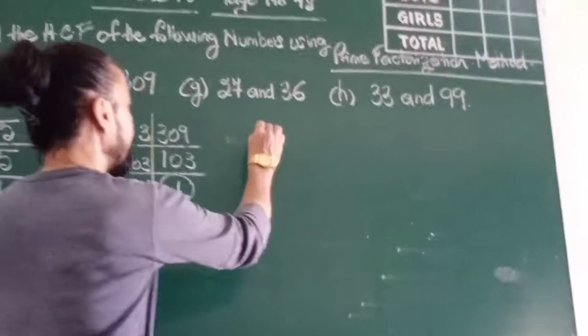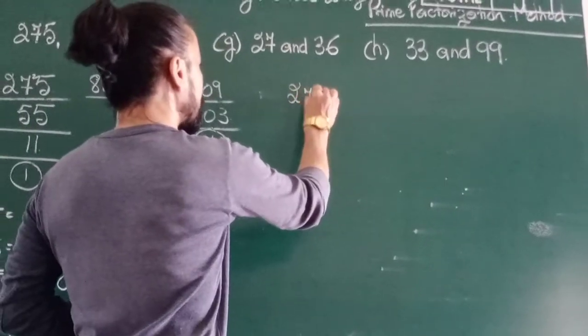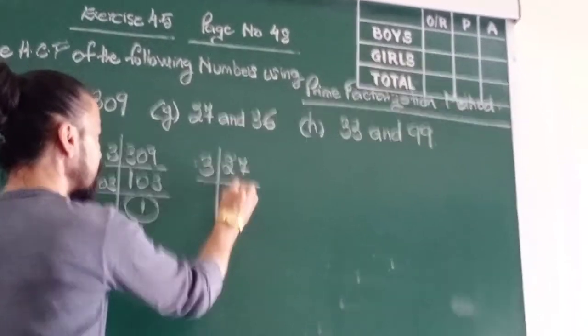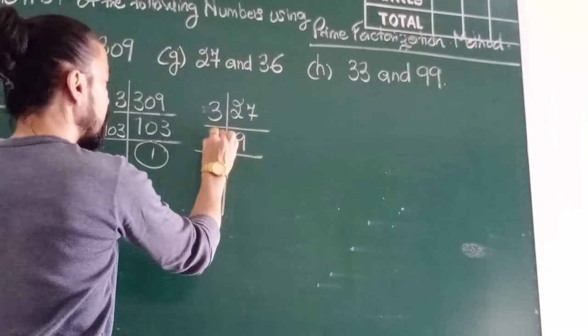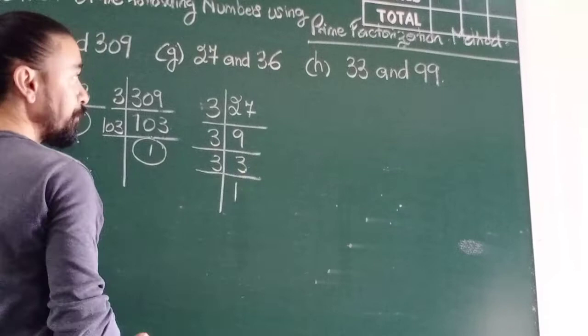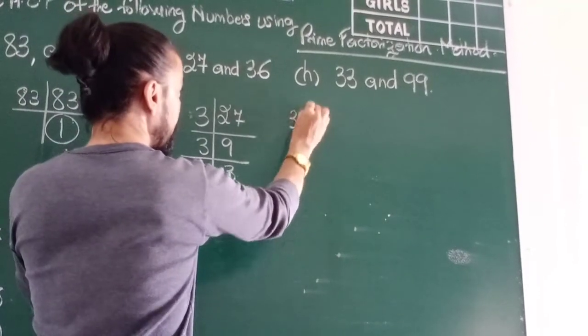When there are no other common factors between them, then there is only one common factor. And that is number 1. 1 is a factor to all the numbers, including itself. Let's hop to the next number. So 27 and 36. I write 27 and I factorize it. 2 does not, but 3 nines are 27. 3 threes are 9. And 3 ones are 3.